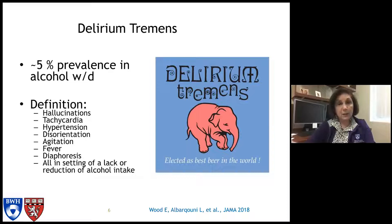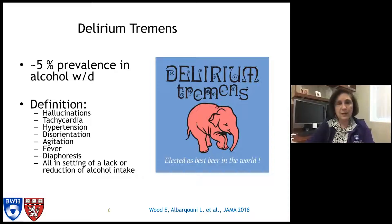When thinking about whether someone has delirium tremens, the definition is important to remember. The patient can have hallucinations, tachycardia, hypertension, disorientation, agitation, fever, and diaphoresis. Of course, all of these have to occur in the setting of reduced or lack of alcohol intake.